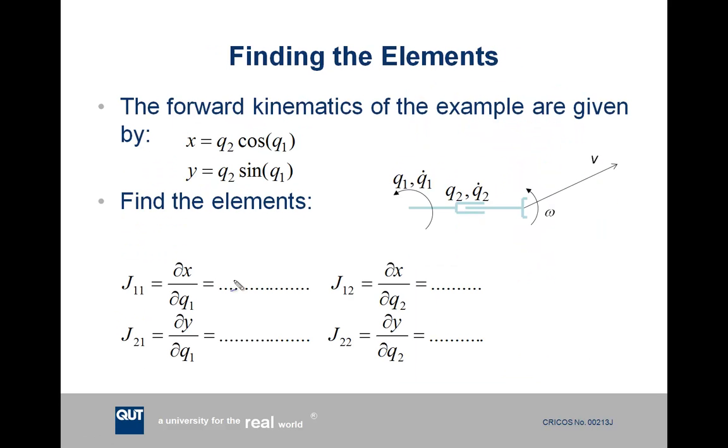So let's use the specific example and work out what the Jacobian for velocity is. So our forward kinematics we can do by inspection. So our x position of our tool point is the length of the second link, q2, times cos of the first joint's joint variable q1, which in this case is an angle. And that gives us our x position. Our y position is very similar, except we use sine. And what we need to do is do four partial derivatives in order to work out what the Jacobian matrix is.